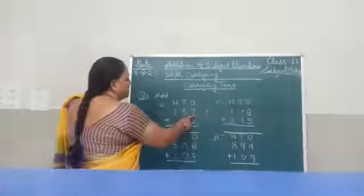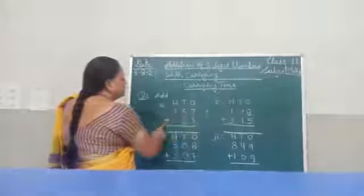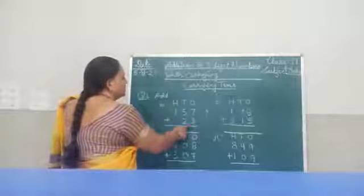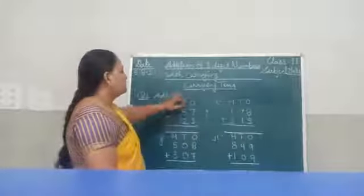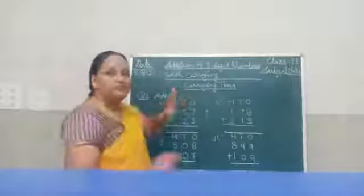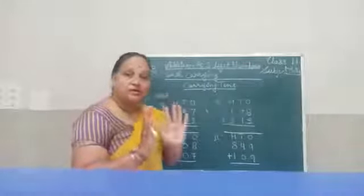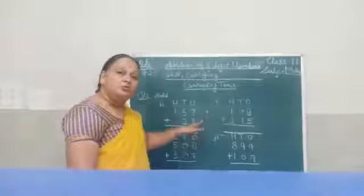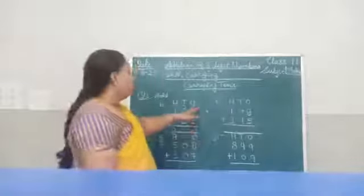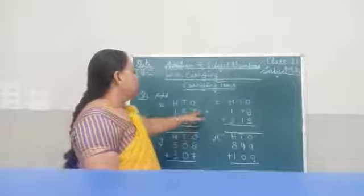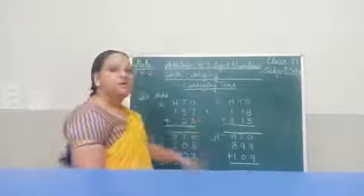Let's see example number 1. The numbers are 157 plus 23. First we will start from ones place — always remember, start from ones place. So first of all we will add 7 plus 3.